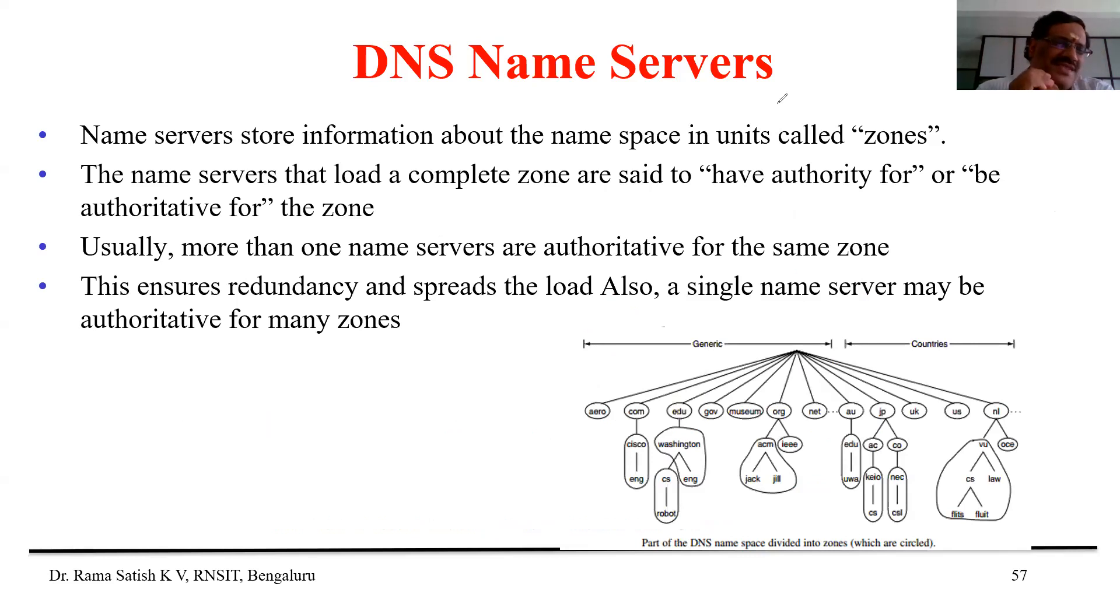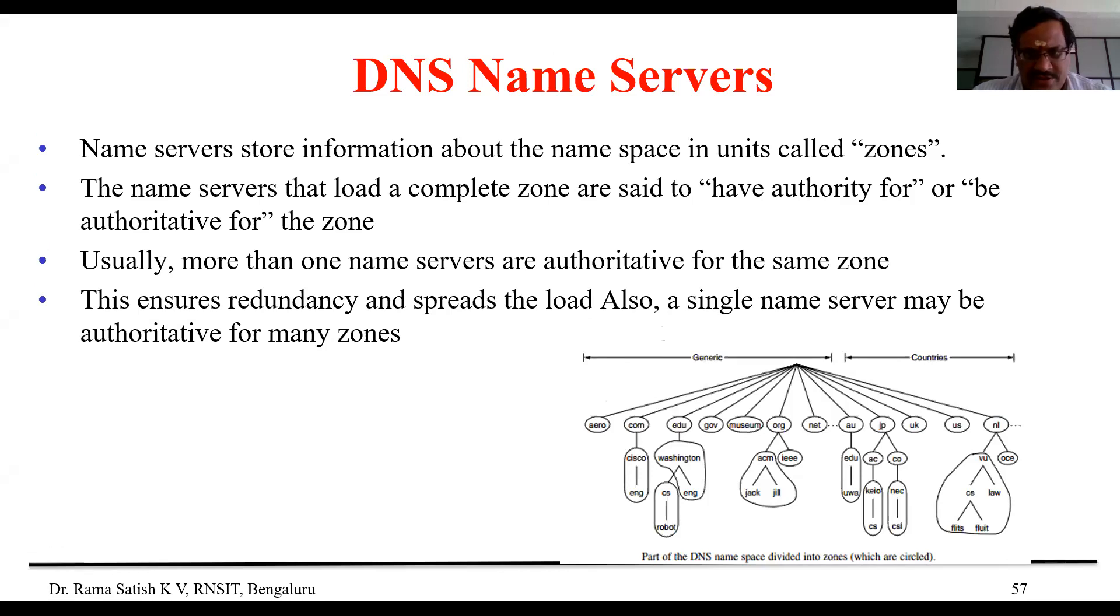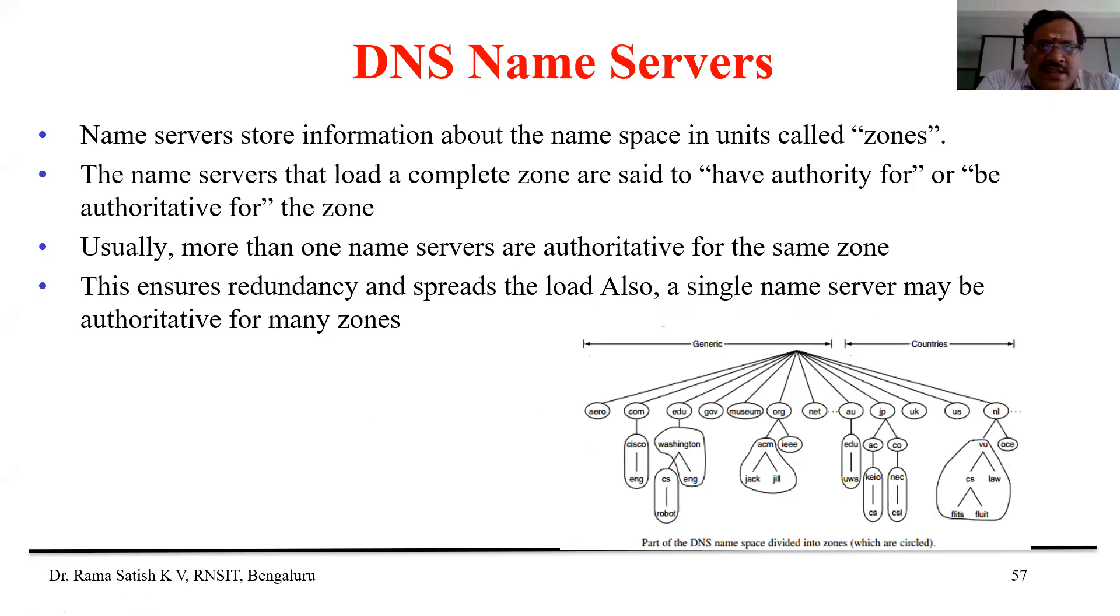You observe, only Indian websites are available in Indian DNS server. If you type google.co.us, Google page that is in US has to open. In Indian server that page will not be there. So what it will do? It will resolve this problem by sending a request to the US DNS server and the resolver will get the IP address.